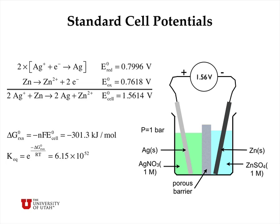So let's look at the silver-zinc cell. At the cathode, we have silver ions being reduced to silver metal, and at the anode, zinc metal being oxidized to zinc ions. We have the overall reaction, which is balanced by multiplying the silver equation by 2. The sum of the reduction potential and the oxidation potential gives the overall cell potential under standard conditions. Remember that you don't multiply the reduction potential by 2 because it is an intrinsic measure of thermodynamic driving force and doesn't depend on stoichiometric coefficients. We can calculate ΔG⁰ for this reaction as −NFE⁰, which is −301.3 kJ/mol, and the equilibrium constant is 6.15 × 10⁵², which is just absolutely enormous.